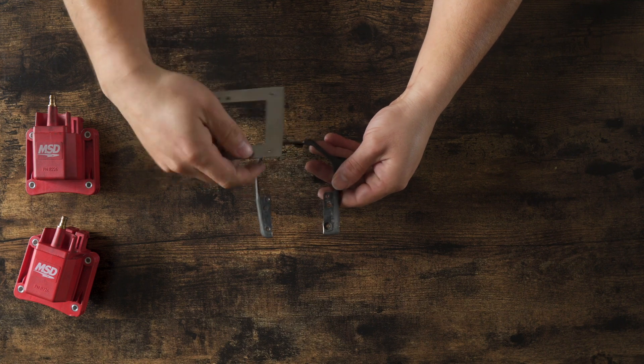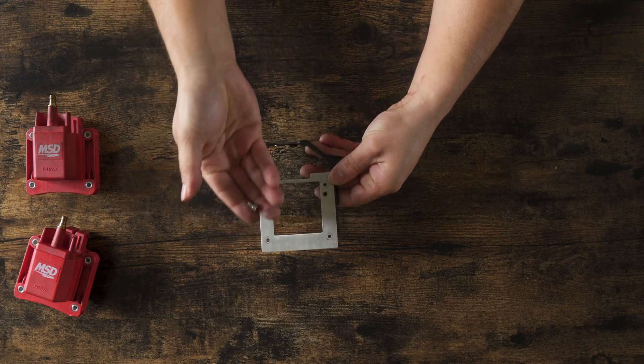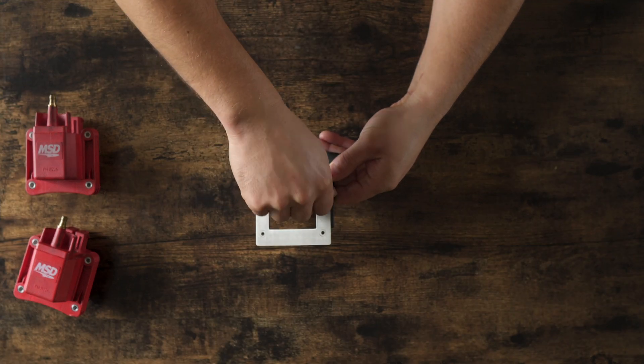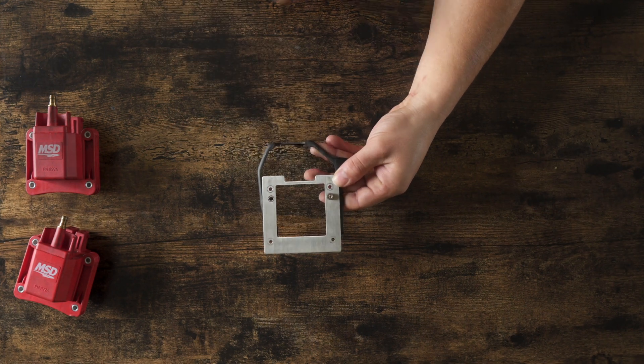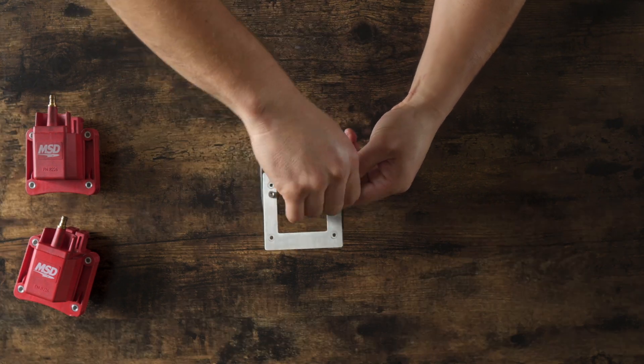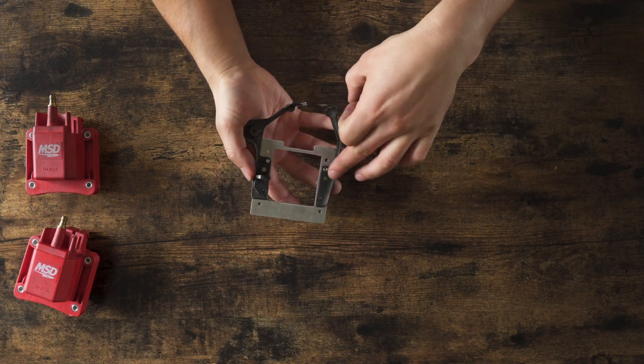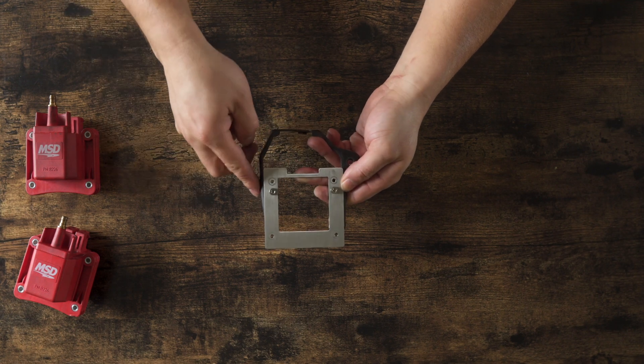These holes here are threaded, and we are actually going to be passing through these small little socket head screws right there. Okay, so as you see, these threaded holes here, and they're going to go through the adapter plate into the OEM bracket.